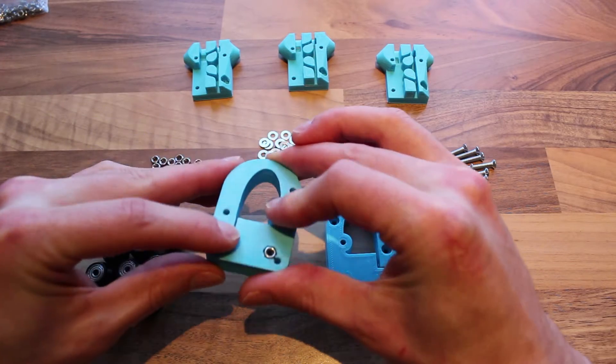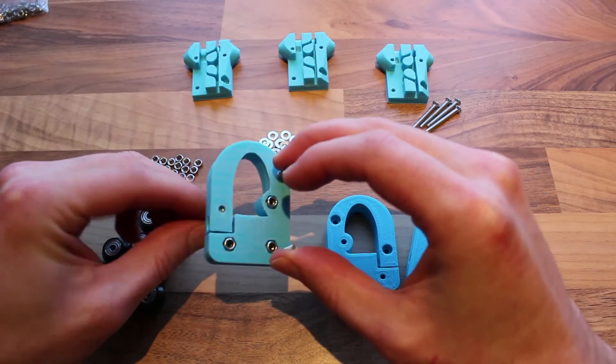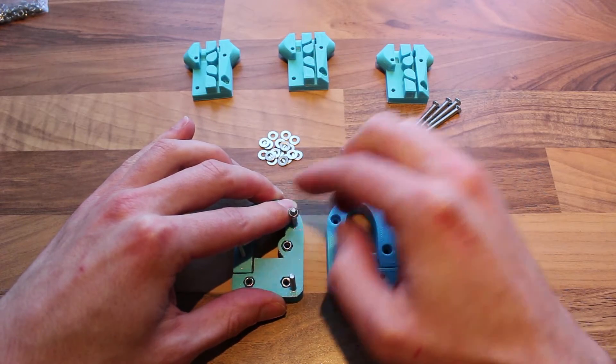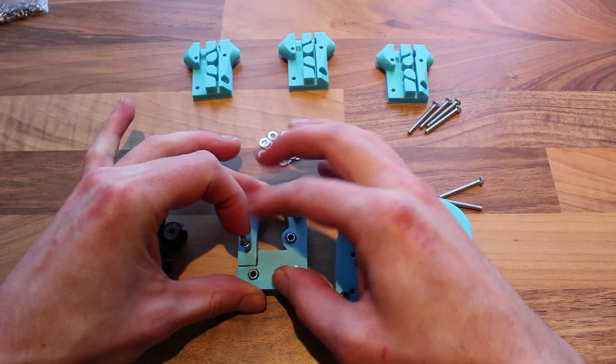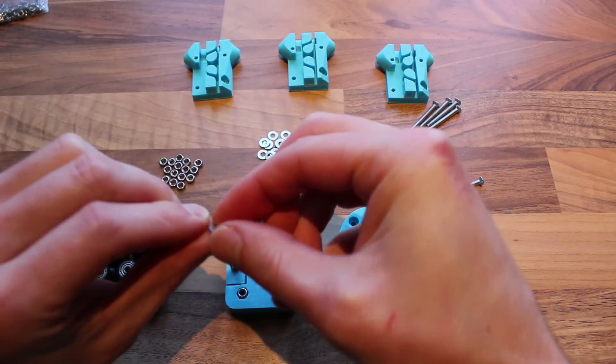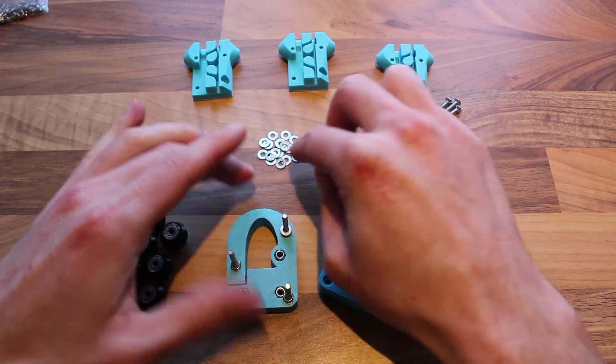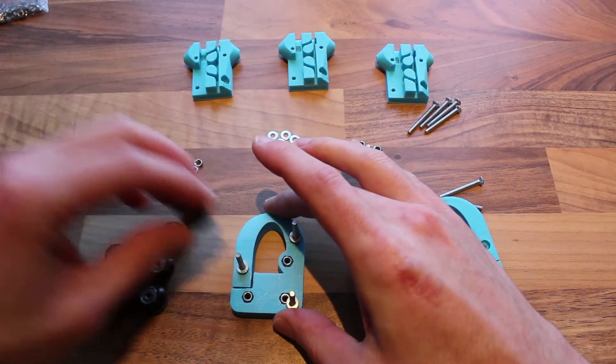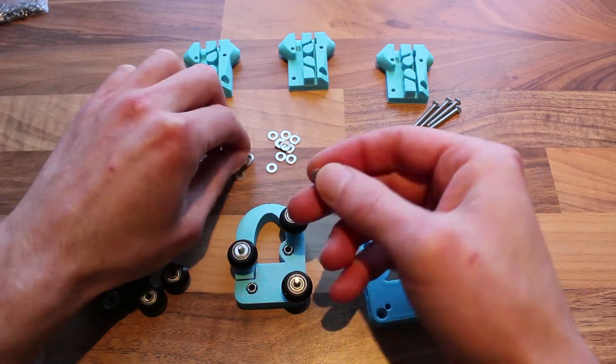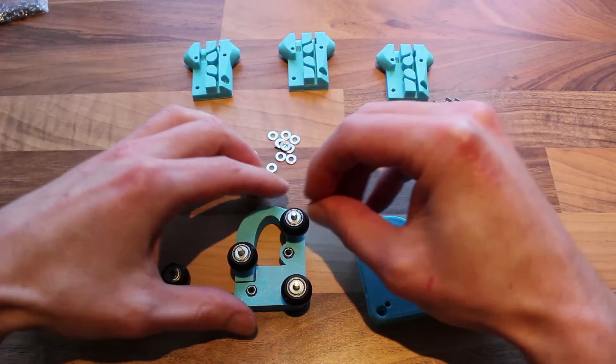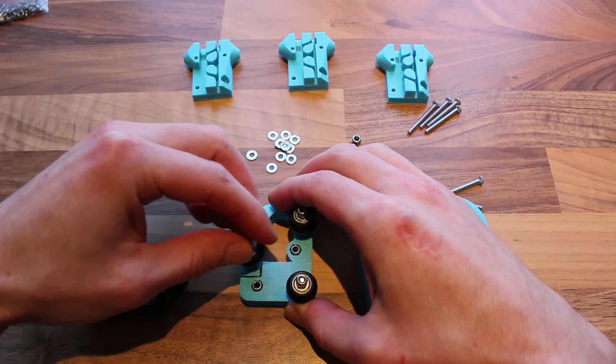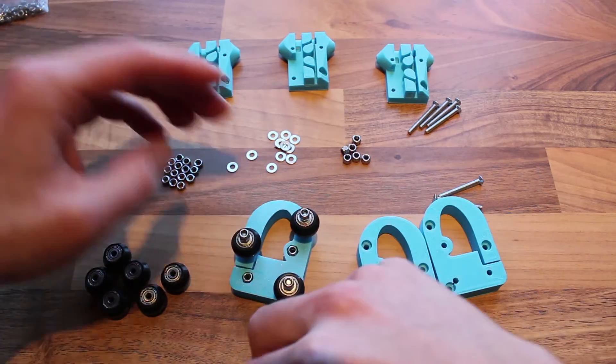Next, the M3 bolts and M3 nut - screw them down firmly so you don't have to do it afterwards. Next comes a washer with the sharp edge down, and the V roller slides over it. Again, a washer with the sharp edges facing up, and last but not least a lock nut. Next, tighten them down.